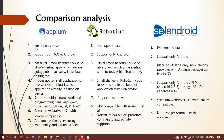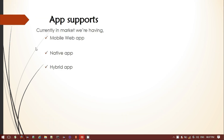Looking at the community and GitHub activity, Selendroid is less strong than APM. Overall, comparing all three tools, they are all free and open source, but only APM supports both iOS and Android. With APM, you don't need to carry out testing as white box testing and you don't need access to the source code or modify existing code. This is the most important feature to consider when choosing the best tool for mobile automation testing.